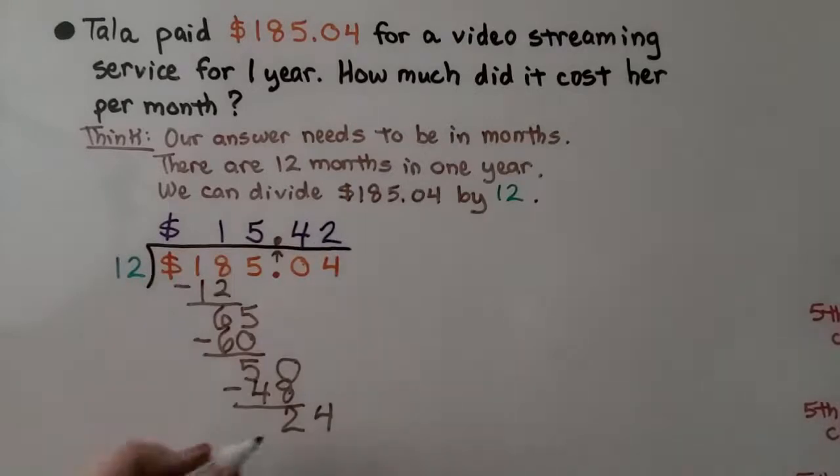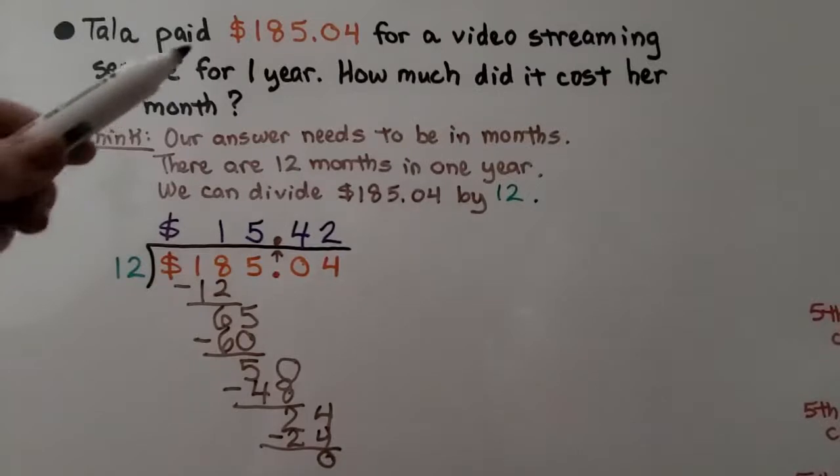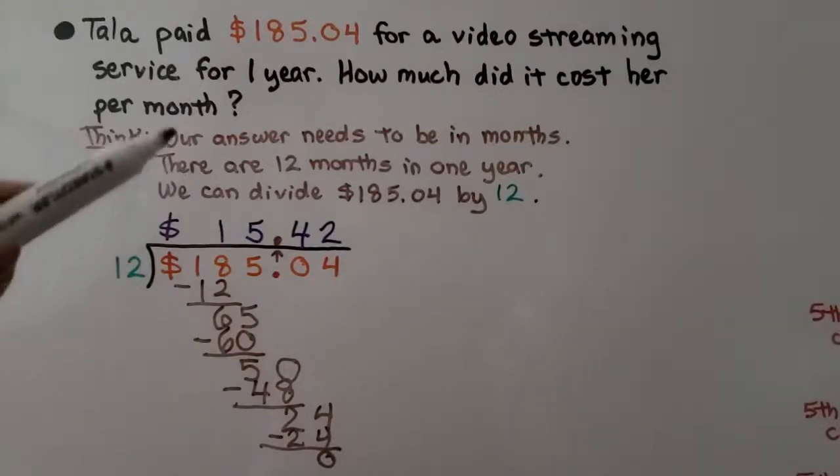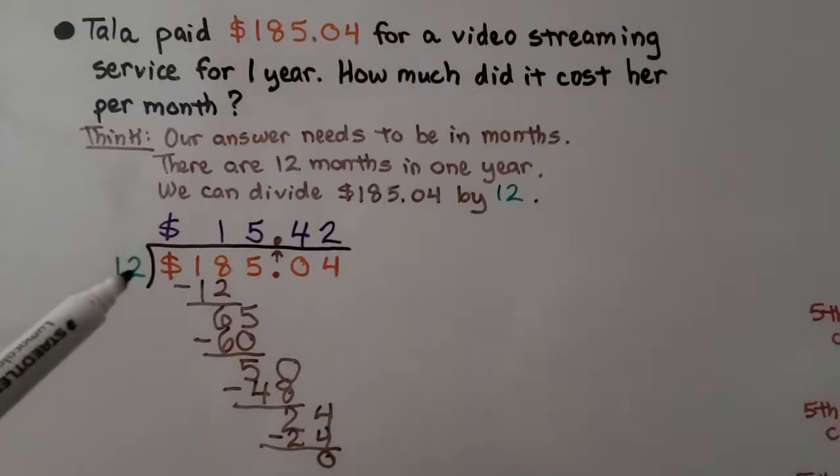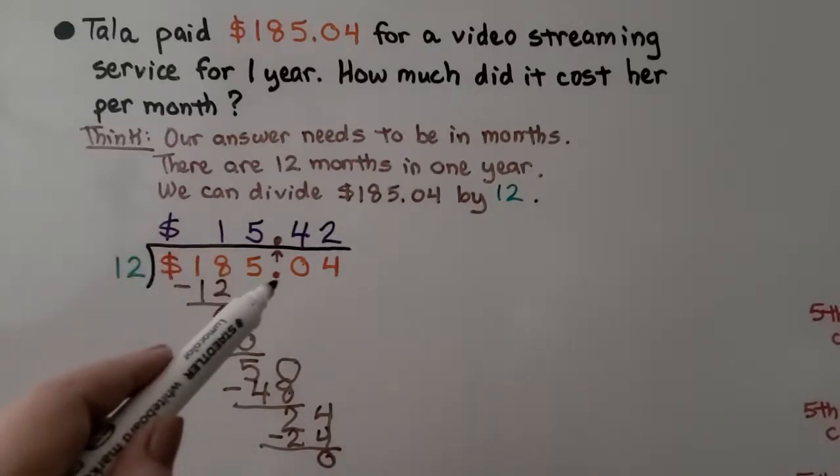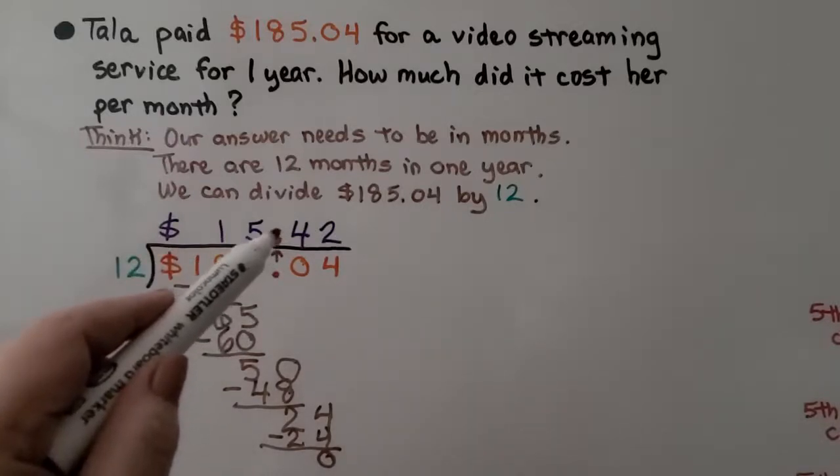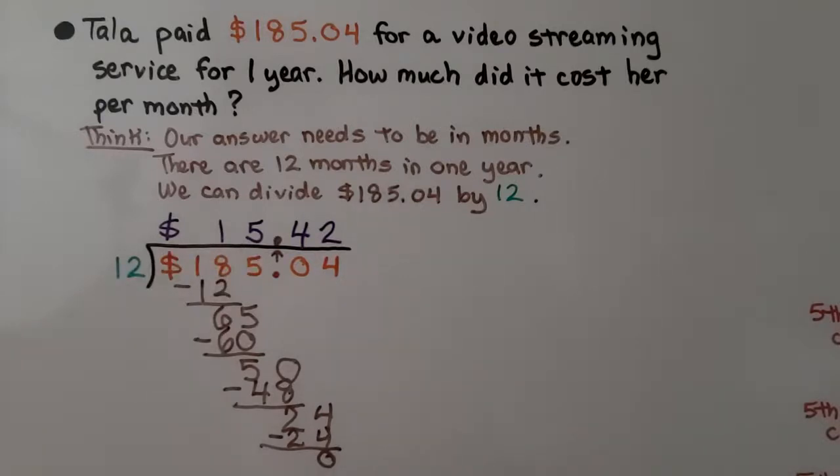It's this 4's turn to come down. 12 fits into 24 two times. We do the multiplication and subtract that amount. We get a 0 remainder. We know it costs her $15.42 per month. Remember when you're dealing with money and your answer is a money amount, we have to have the dollar sign up there. This was a whole number. We just brought the decimal point straight up and it told us $15.42.